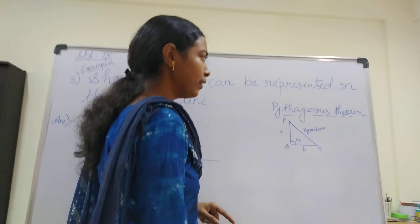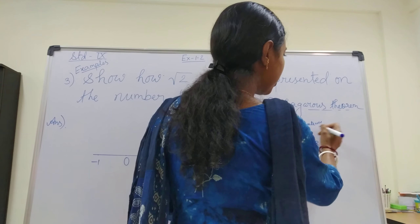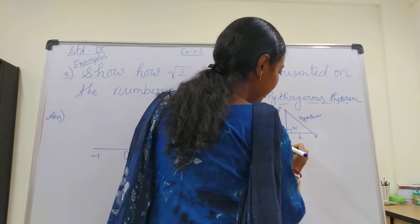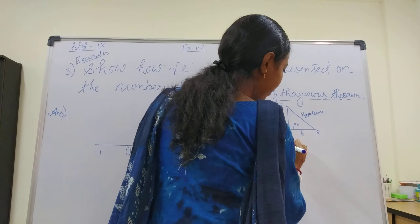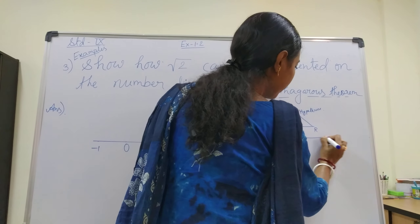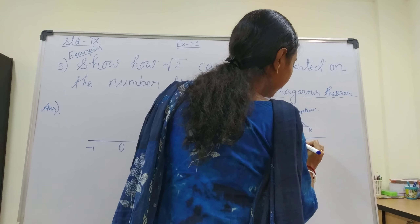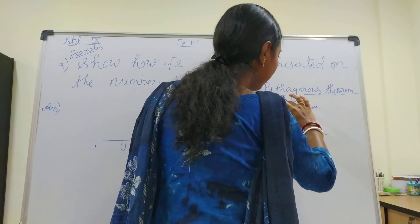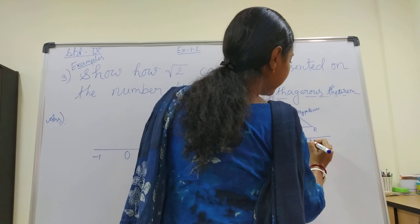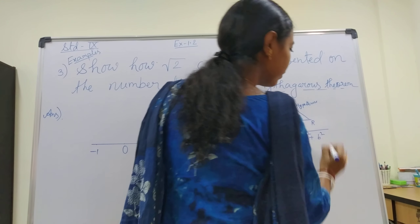Pythagoras has given the formula for the hypotenuse: hypotenuse equals the square root of perpendicular height squared plus base squared. That is: H = √(P² + B²).